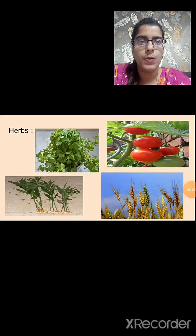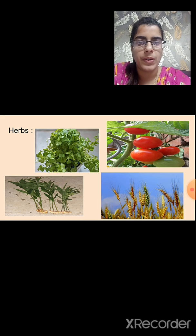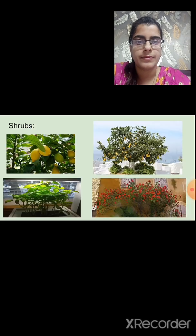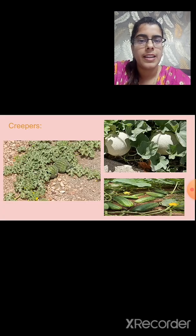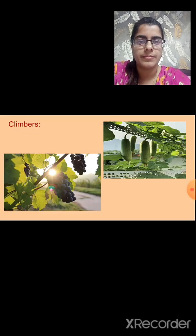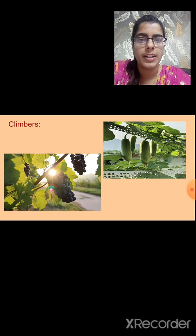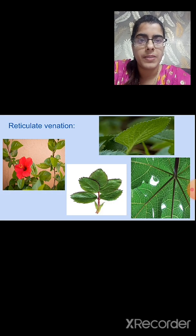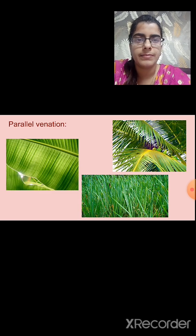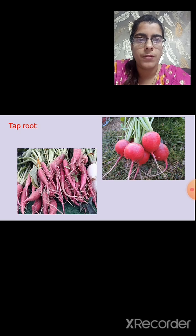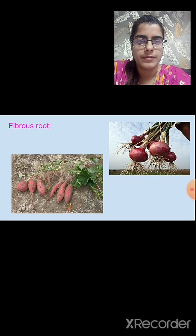In these slides you can observe images of various plants: herbs like tomato, coriander, ginger, and wheat; shrubs like lemon, rose, and tulsi; trees like neem, mango, and coconut; creepers like watermelon, muskmelon, and cucumber; and climbers like bottle gourd and grapes. You can observe reticulate venation in hibiscus, rose, tulsi, and papaya, and parallel venation in banana, coconut, and grasses. Examples of plants with tap roots and fibrous roots are also shown.